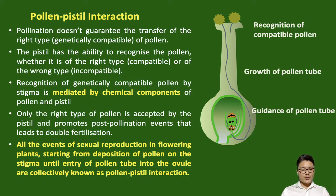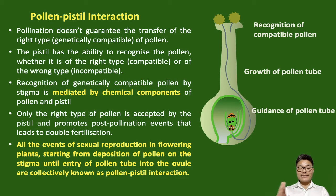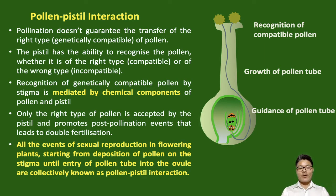All the events of sexual reproduction in flowering plants, starting from the deposition of pollen onto the stigma until the entry of the pollen tube into the ovule, are together called pollen pistil interaction.